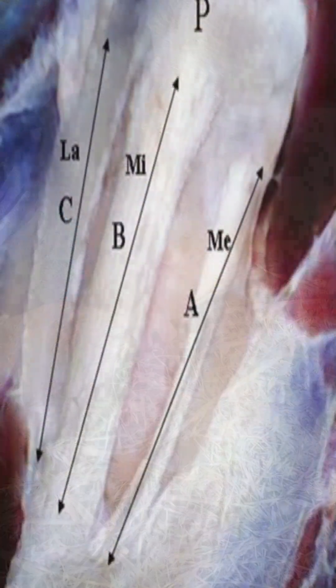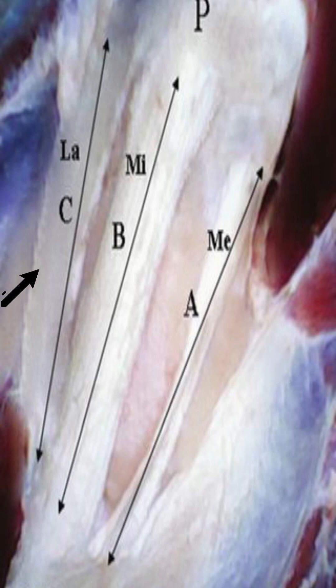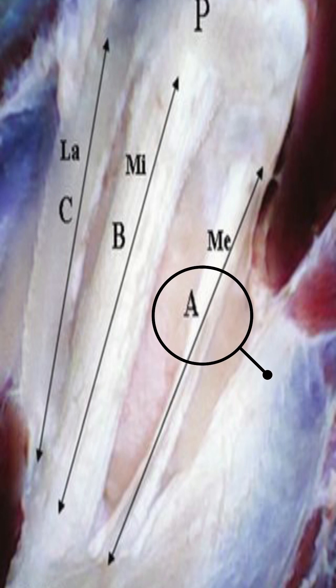Now coming to the identification of the ligament, there are three major ligaments: the medial ligament, the middle ligament, and the lateral ligament. For MPD, the medial ligament is incised.